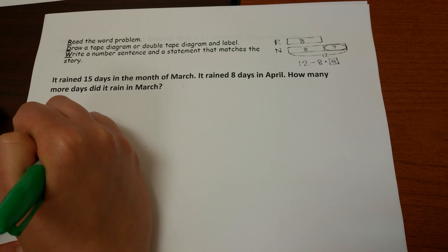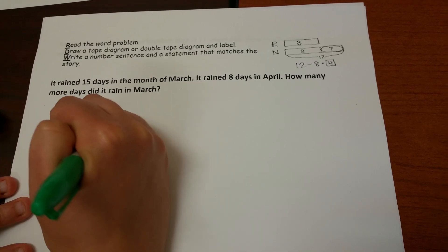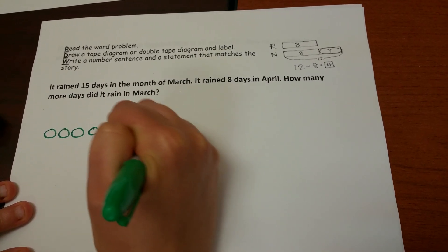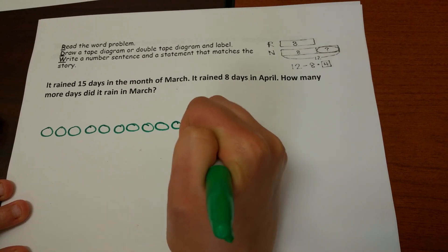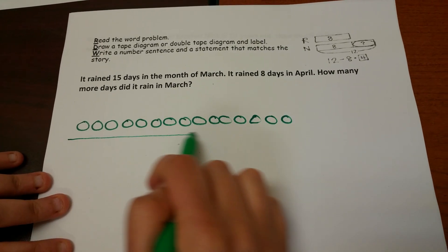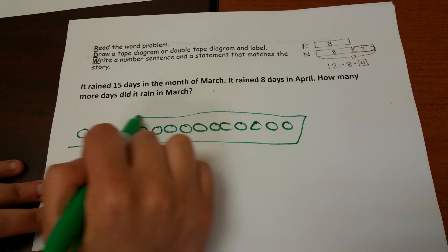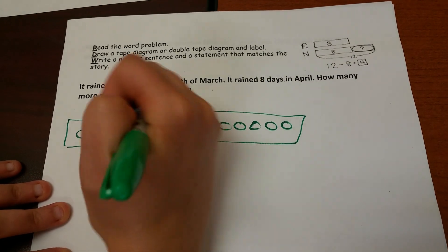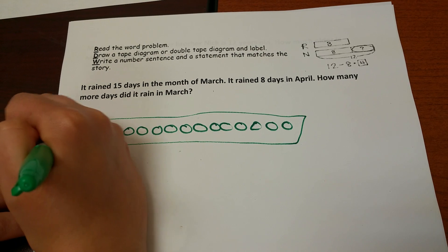So I'm going to draw 15 circles. 1, 2, 3, 4, 5, 6, 7, 8, 9, 10, 11, 12, 13, 14, 15. Simple math drawings. I put it in my tape diagram.